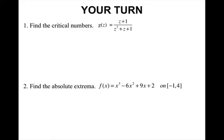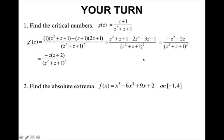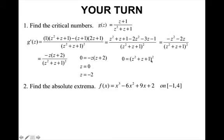For number 1, find the critical numbers using the quotient rule, then simplify. Setting the numerator equal to 0 gives z equals 0 and z equals negative 2. Setting the denominator equal to 0 gives an imaginary number, so we don't have to worry about it. So my critical numbers are at 0 and negative 2 — this tells me there's going to be a local min or max at one or both of these values.